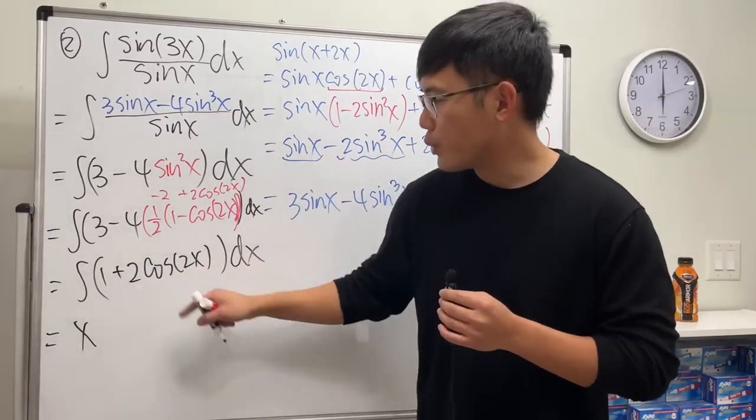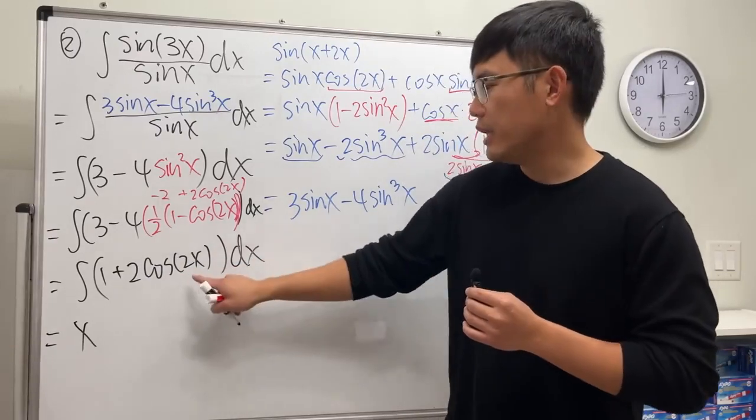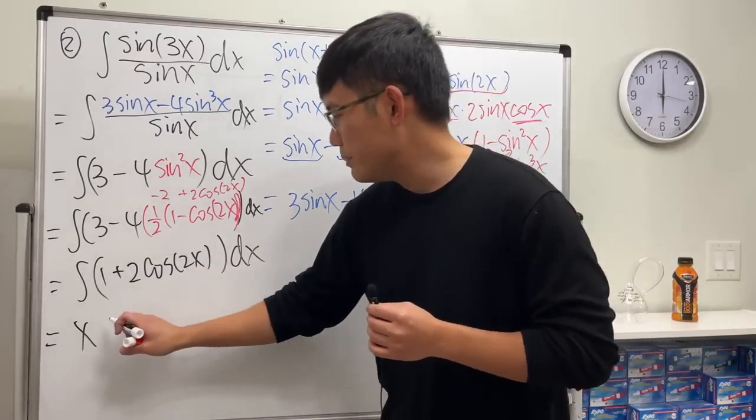And then to integrate this, you can do a u-sub in your head where u equals 2x, and then you can see everything becomes positive sine of 2x.